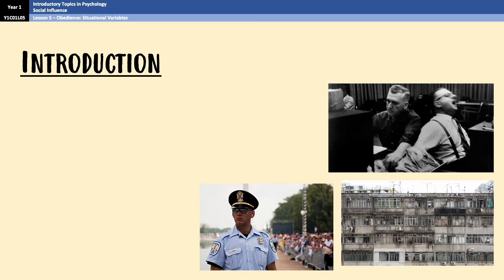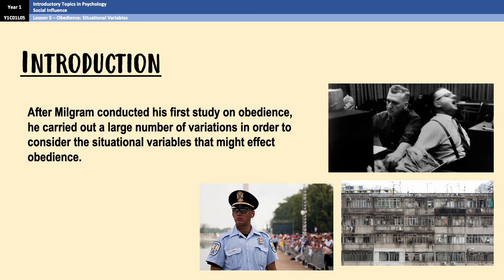If you remember from the last lesson, after Milgram conducted his baseline experiment, he came to the conclusion that the events of the Second World War didn't have anything to do with German people being fundamentally more obedient than other people, because in his experiment he found that American participants were also very obedient even when they were asked to do harm. So because of that, he suspected that there were certain factors in a situation that encouraged obedience, and he decided to conduct further studies to investigate those factors. These are known as situational variables — features of the immediate physical and social environment that may influence a person's behavior.